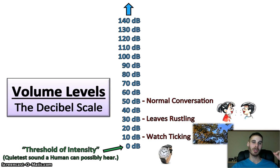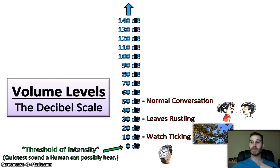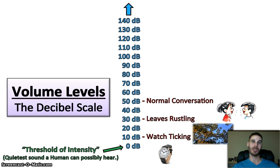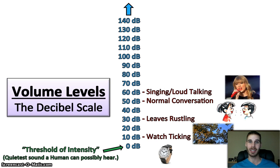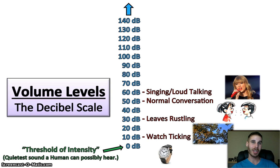Jumping up a little bit to 50 decibels — that's the volume level of a normal conversation that you'd have with about one meter of distance between another human being. Normal conversation is about 50 decibels, and that's about the volume I'm talking at right now. If I were talking to a room full of high school students, I would probably be speaking at 60 decibels, which is my projecting voice. This is also the volume that people sing at, so it's more likely that you'll be singing at about 60 decibels. When you're out at karaoke night on a Friday, 60 decibels is about where you're at.